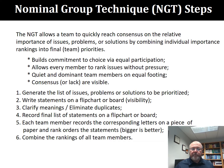You generate the list of issues, problems, or solutions — whatever it is you're going to prioritize. Write those out on a flip chart or board in a visible location where all members of the group can easily see them. Before starting the real NGT process, clarify the meanings behind those items, eliminate duplicates, and write down the final list of statements or issues on a flip chart or whiteboard. If there are six items, identify them as A, B, C, D, E, F.